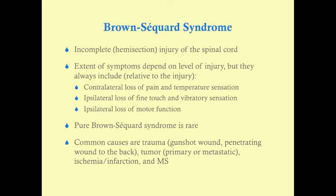Brown-Sequard syndrome is an incomplete hemisection injury of the spinal cord, and the extent of symptoms depends on the level of injury. It always includes the level of injury and everything below it: contralateral loss of pain and temperature sensation (spinothalamic tract), ipsilateral loss of fine touch and vibratory sensation, and ipsilateral loss of motor function. Pure Brown-Sequard syndrome is rare. Common causes include penetrating trauma such as gunshot or knife wounds, non-penetrating trauma like a car accident with spinal fractures, tumor (primary or more commonly metastatic), ischemia/infarction, and MS.